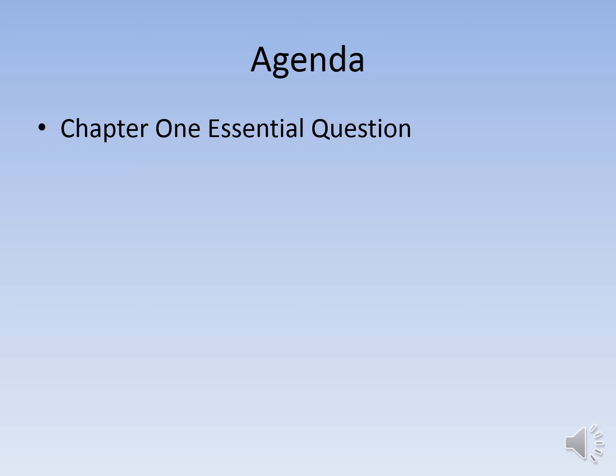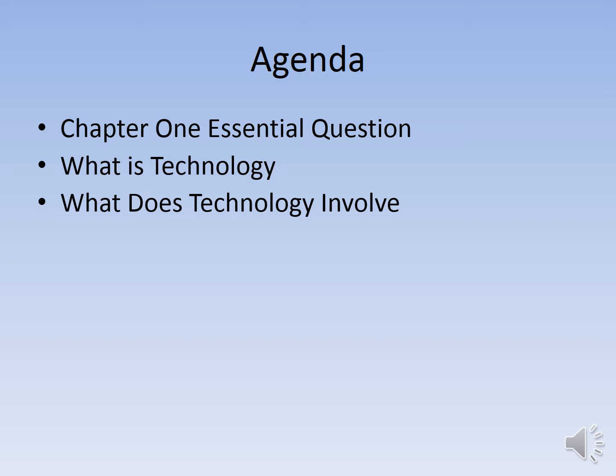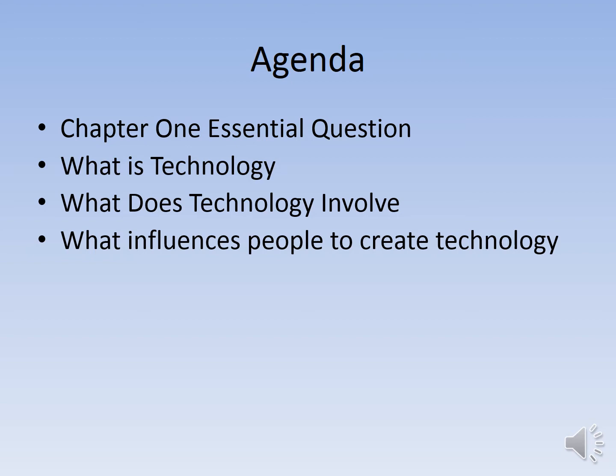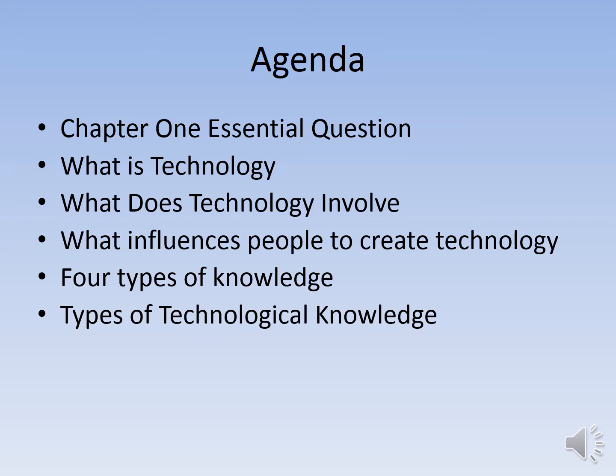Let us go ahead and get started. Our agenda for today is going to be: we're going to talk about the Chapter 1 essential question, which is the main question that I want you to understand and get out of reviewing Chapter 1. The second is having a clear understanding of what technology is. Also, there are four factors that all technology involves, what influences people to create technology, the four types of knowledge, the types of technological knowledge, and then the design process. We're also going to talk a little bit about the project, but I think I might do that more in class rather than on this presentation.